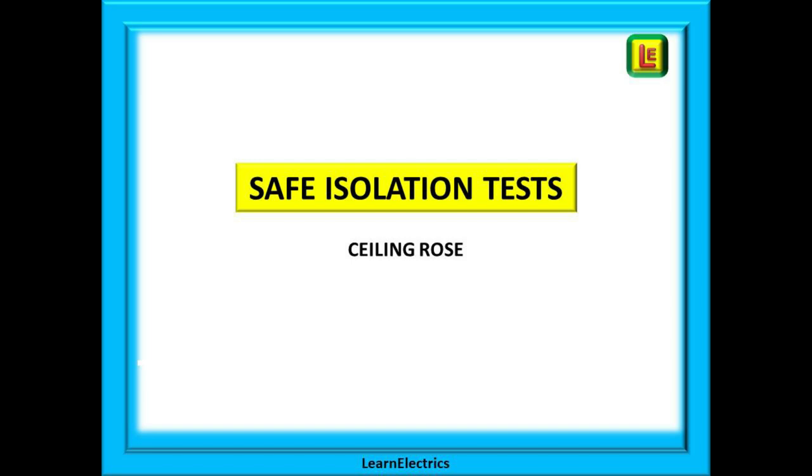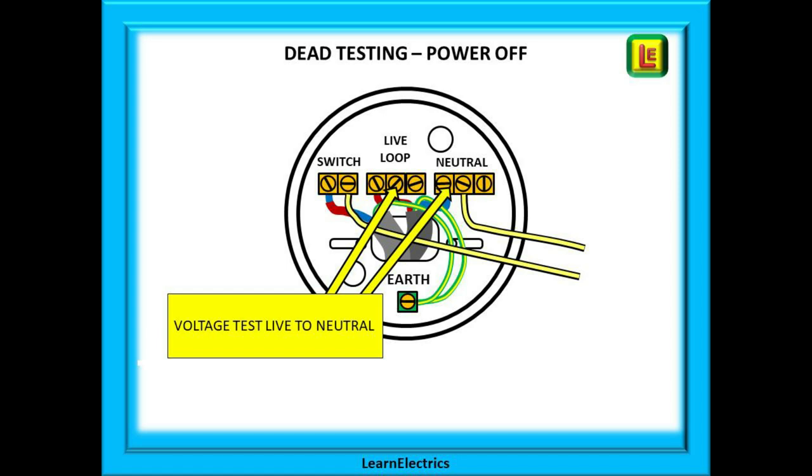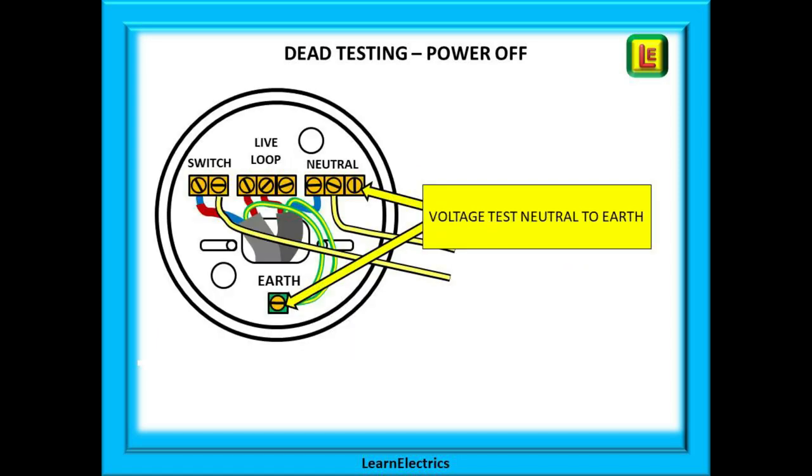And how would we check for safe isolation at a ceiling rose? Very simply, it is no different to the other single phase tests. After locking off and isolating, check with your voltage indicator between live and earth, then between live and neutral, and finally between neutral to earth. If they all read zero volts, that has proved safe isolation.